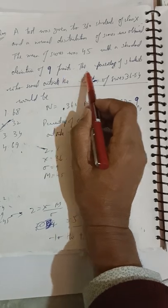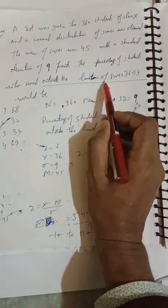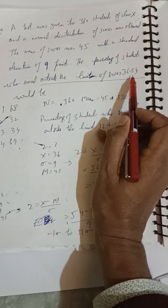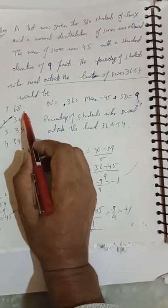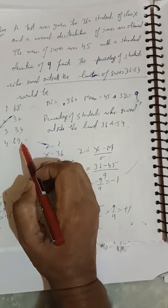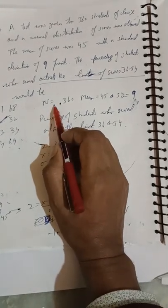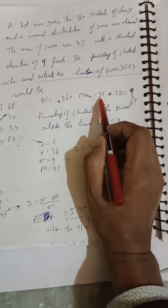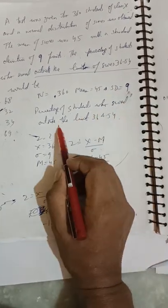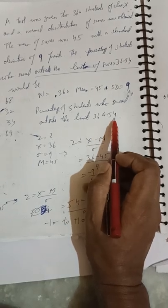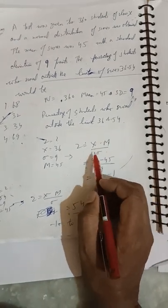The percentage of students who scored outside the limit of scores 36 to 54 would be: 68, 32, 34, or 69. Given: n = 360, mean = 45, and standard deviation = 9. Percentage of students who scored outside the limit of 36 and 54. First, we apply the formula z = (x - m) / sigma.